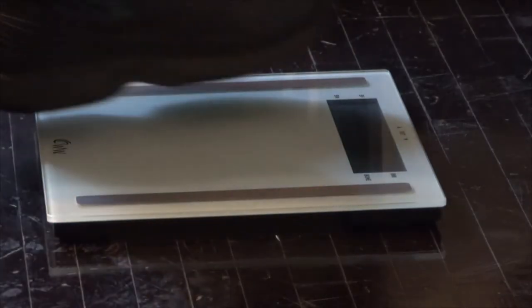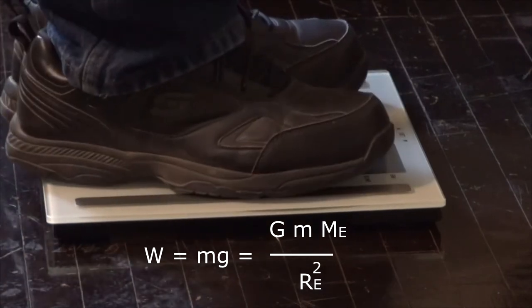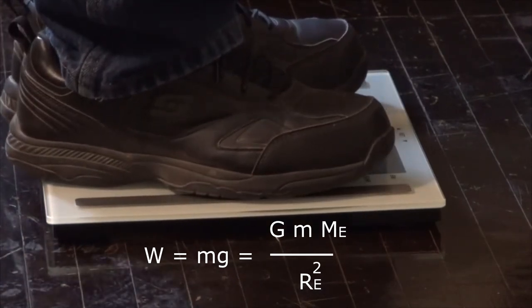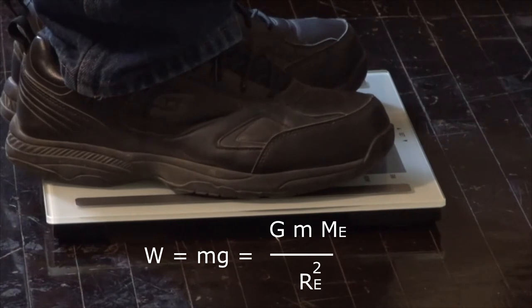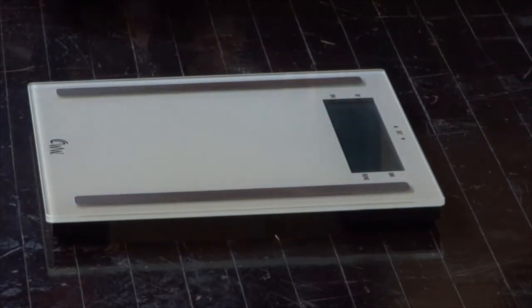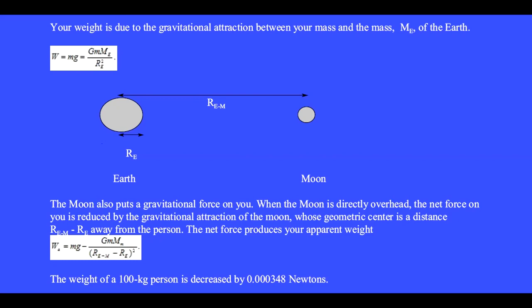We already learned that your weight, little m times g, is due to the gravitational attraction between your mass and the mass big M sub e of the entire Earth. The Moon also puts a gravitational force on you. Here is the Earth and this is the Moon.